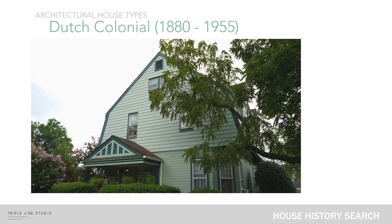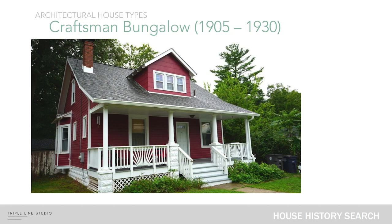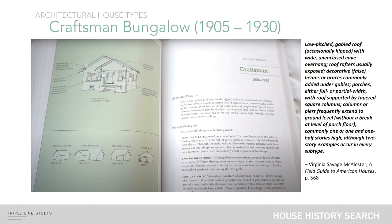Another architectural house type is the Dutch Colonial, which I also have within my neighborhood. They were built between 1880 and 1955 — a very broad range — and fall into the colonial revival category. What makes it a Dutch colonial is that it has a gambrel roof. A very popular house type, especially on the East Coast, is the Craftsman Bungalow, built between 1905 and 1930. Features for the Craftsman are the low-pitched gable roof and more square columns or column piers that extend to the ground level. It's usually a one-story building with maybe a half-story above, though two-story examples exist as well.